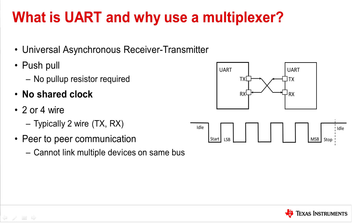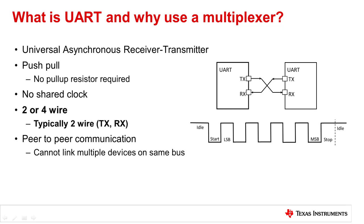This means there is not a shared clock signal to synchronize the output of the bits from the transmitting UART to the input of the receiving device. Instead, these devices use individual transmit and receive wires for serial communication that relies on an agreed-upon configurable specified frequency. Typical applications use a pair of transmit and receive lines. Four-wire communication can also be implemented using a request-to-send wire and a clear-to-send wire for flow control, however this isn't as common.